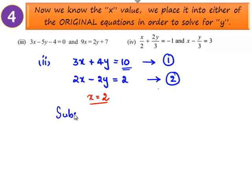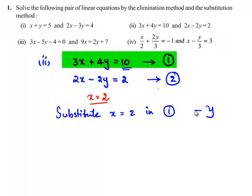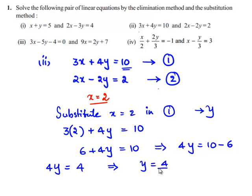Substitute x is equal to 2 in equation number 1 so as to obtain the value of y. That becomes 3 times of 2 plus 4y is equal to 10. So 6 plus 4y is equal to 10, which implies 4y is equal to 10 minus 6 equals 4, giving y is equal to 4 divided by 4, that is 1. Therefore, we get y is equal to 1.